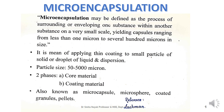Hello students, today we are going to learn about an interesting technology called microencapsulation. This technology is used as a means of applying relatively thin coatings to very small particles of solids, droplets of liquids, or dispersions. This technique involves coating of particles whose dimensions range from less than a micron to up to 5000 microns in size. Microencapsulation is defined as the process of surrounding or enveloping completely one substance within another substance on a very small scale, thereby yielding capsules that range from less than a micron to several hundreds of microns in size.